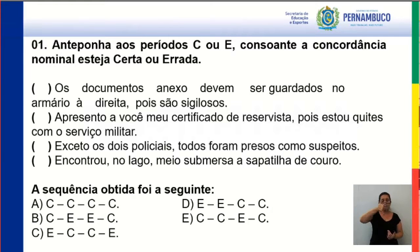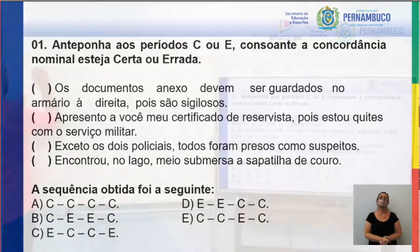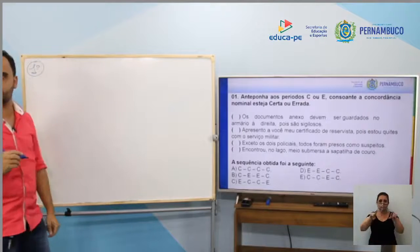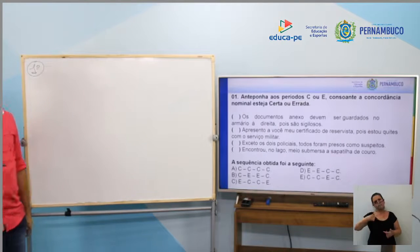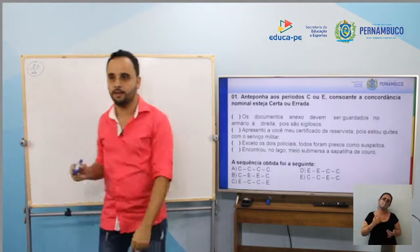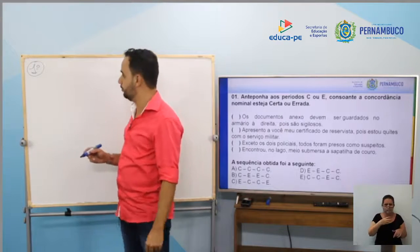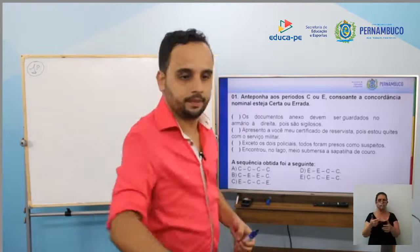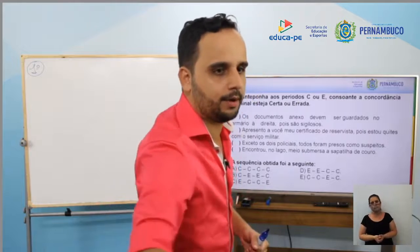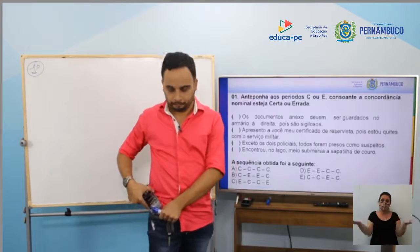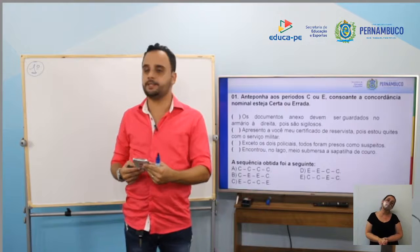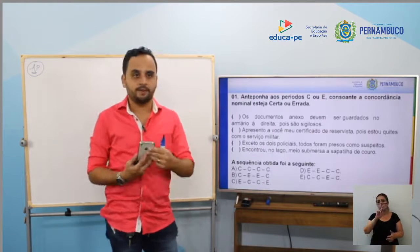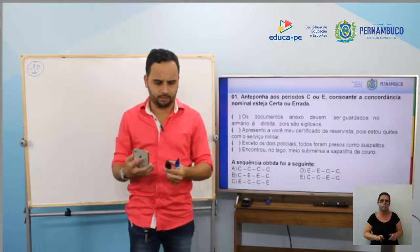Na primeira questão — eu quero que a gente faça pra responder junto. Cinco segundos pra vocês responderem essa questão, enquanto eu vejo a mensagem do pessoal aqui. O enunciado diz: anteponha C de certo ou E de errado, consoante a concordância nominal.